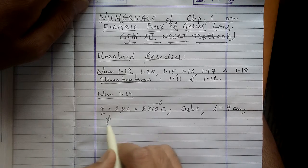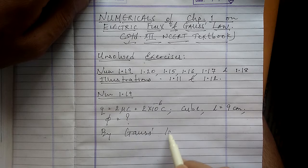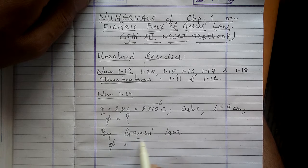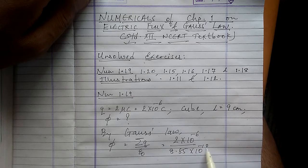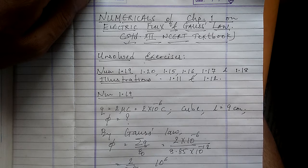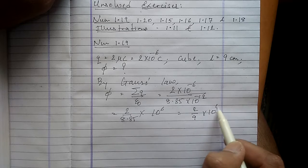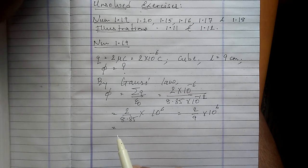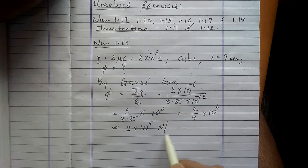We wish to find the net flux coming out of the cube. By Gauss's law, flux Φ = ΣQ / ε₀. ΣQ is 2×10⁻⁶ C, and ε₀ is 8.85×10⁻¹². So 10⁻⁶ divided by 10⁻¹² gives 10⁶, and 2/8.85 is nearly 2/9, which is approximately 1.9 — so nearly 2×10⁵ Newton per coulomb. This is your flux.